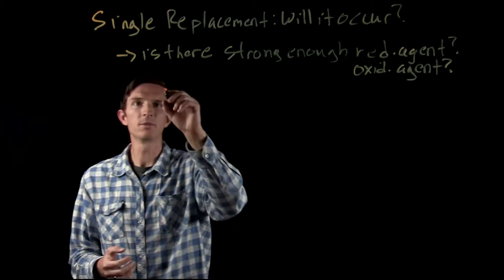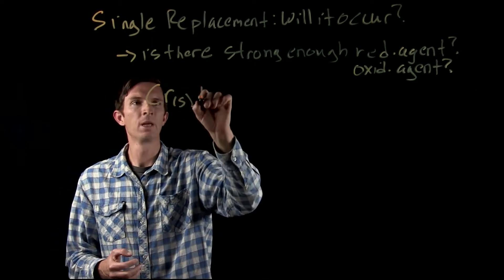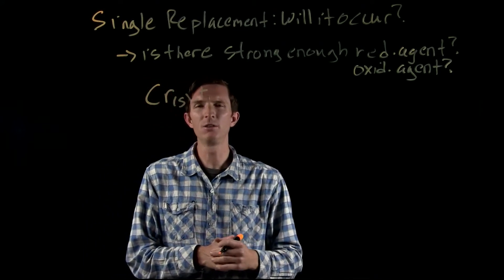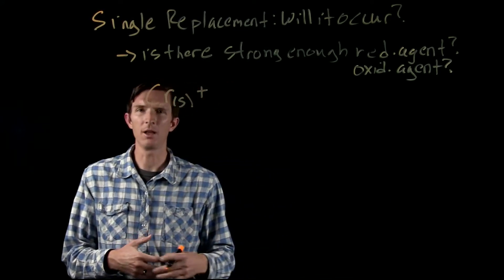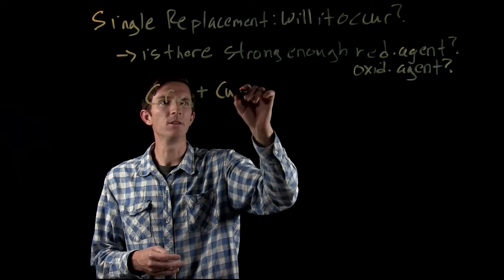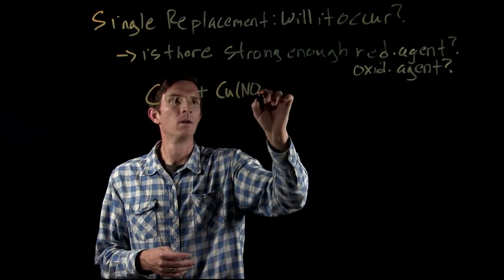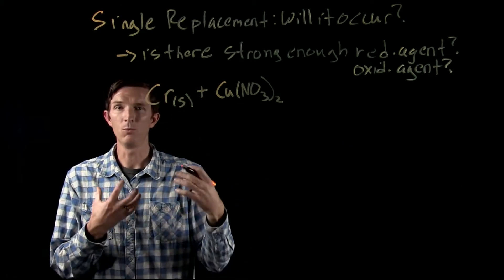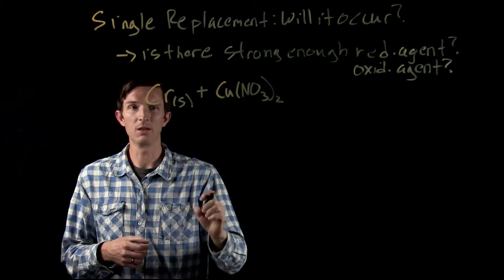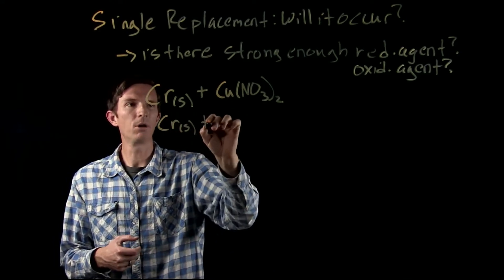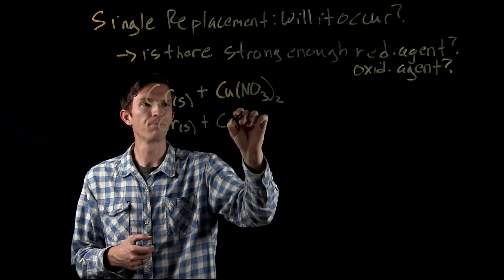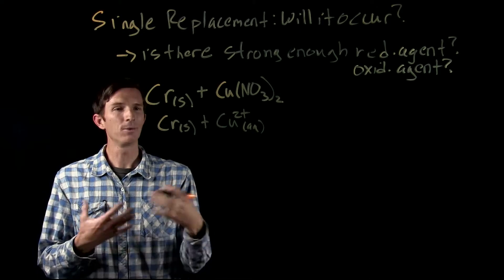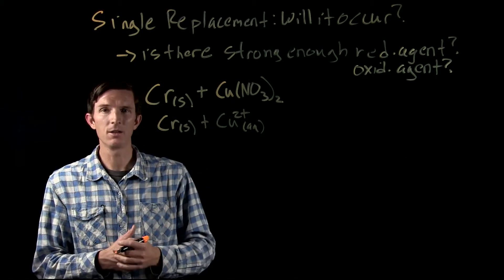Let's say for example we have solid chromium, and we're going to put that chromium into a solution containing something like copper — maybe we add copper nitrate. Remember we're dealing with redox reactions; we only care about what's reacting, and our nitrate is going to be a spectator ion here. So this would be chromium plus aqueous copper 2+.